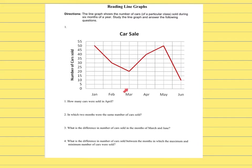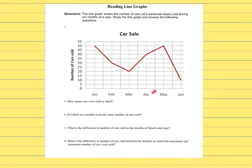As you can see here, the independent variable is the month of the year. The dependent variable is the number of cars sold because the title is 'Car Sales over a Period of Time.' The information covers a period of six months, so the entire year is not covered in this graph.